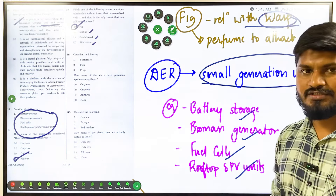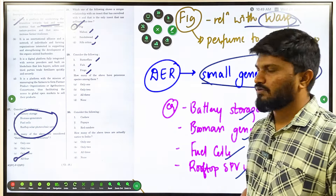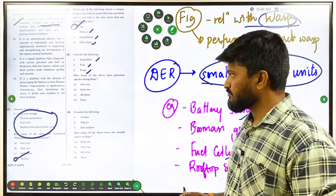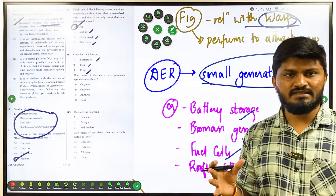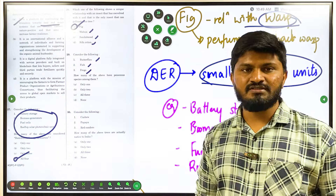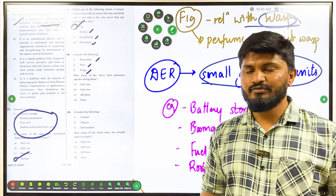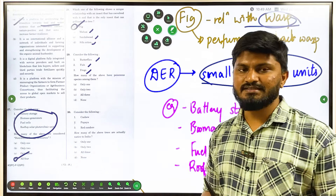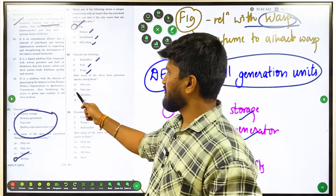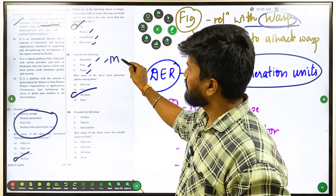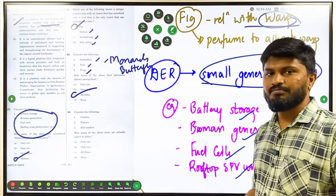Question 29 deals with biodiversity. Among butterflies, fish, and frogs, how many have poisonous species? There are many poisonous butterflies — those with striking colors are often poisonous, like the monarch butterfly. In fish, the puffer fish is poisonous. Many frogs found in the Amazon and Western Ghats with bright, contrasting colors are poisonous — the more unique and bright the color, the more poisonous the frog. The answer is D — all three have poisonous species.